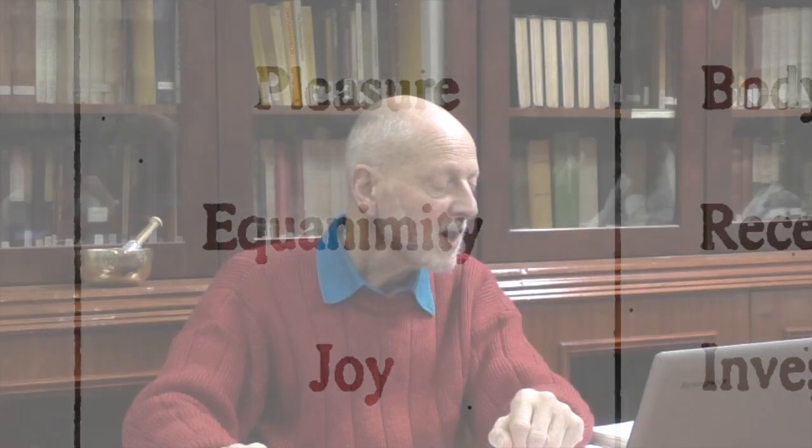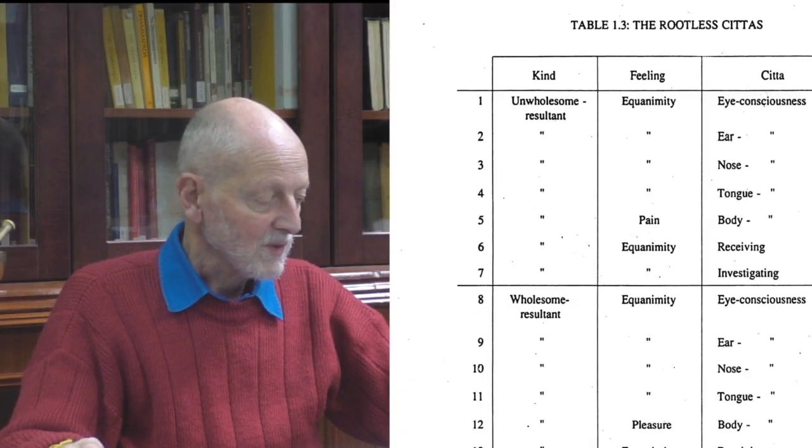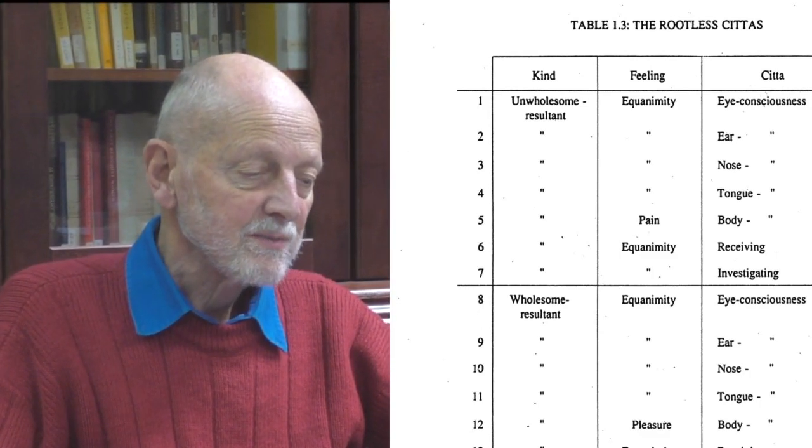The cittas in table 1.3 are, for the first fifteen, all resultants. They are vipaka. They are called unwholesome resultants. That does not mean they are in themselves unwholesome, because they are vipaka — but they are the result of an unwholesome action.